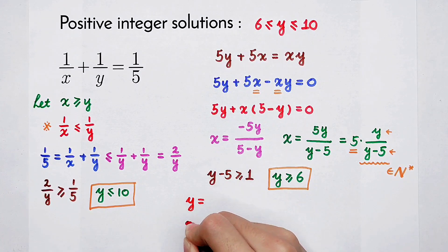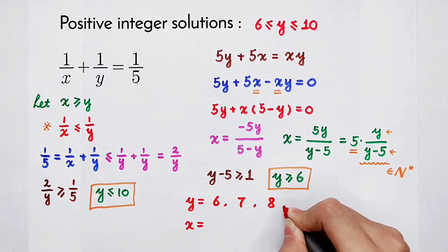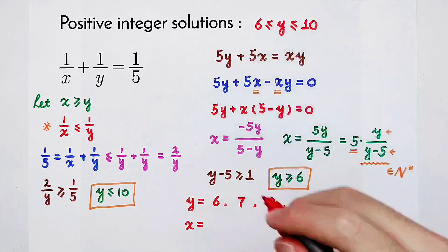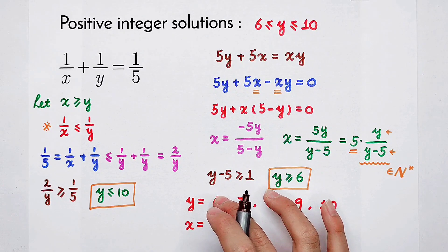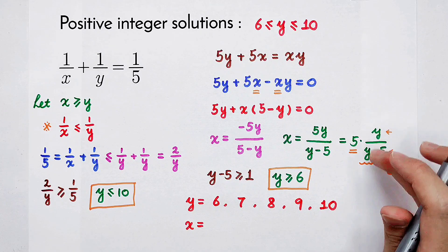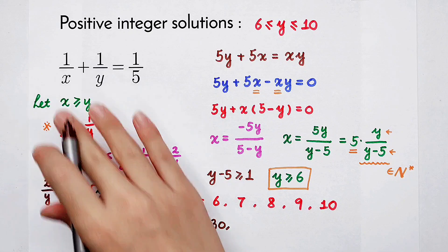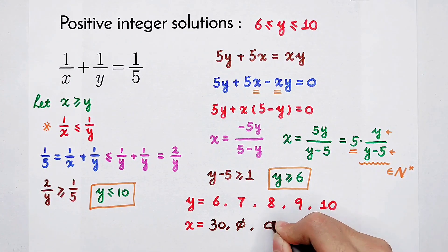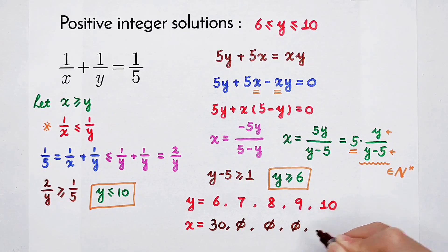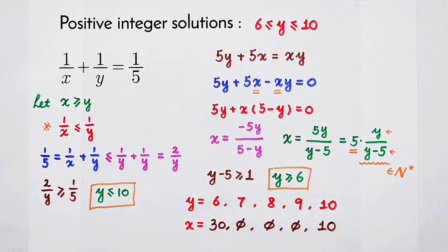Under this case where x is greater or equal to y, we have y is greater or equal to 6 and smaller or equal to 10. So y can be 6, 7, 8, 9, or 10. When y is 6: 6 divided by (6 minus 5) is 6 divided by 1, which is 6. So x is 5 times 6, which is 30. When y is 7, 8, or 9, there are no positive integer solutions. When y equals 10, x equals 5 times (10 divided by 5), which is 10. So there are two cases.